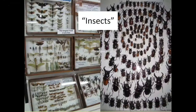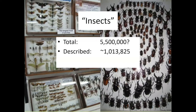When I talk about insects, I'm talking about a pretty large group. Often people consider them similar to amphibians — just one group of animals — but in reality insects are extremely diverse. We think there are about 5.5 million species, of which about 1 million have currently been described. Compare that to mammals: there are only about 5,500 species — roughly 1,000 times fewer than insects.